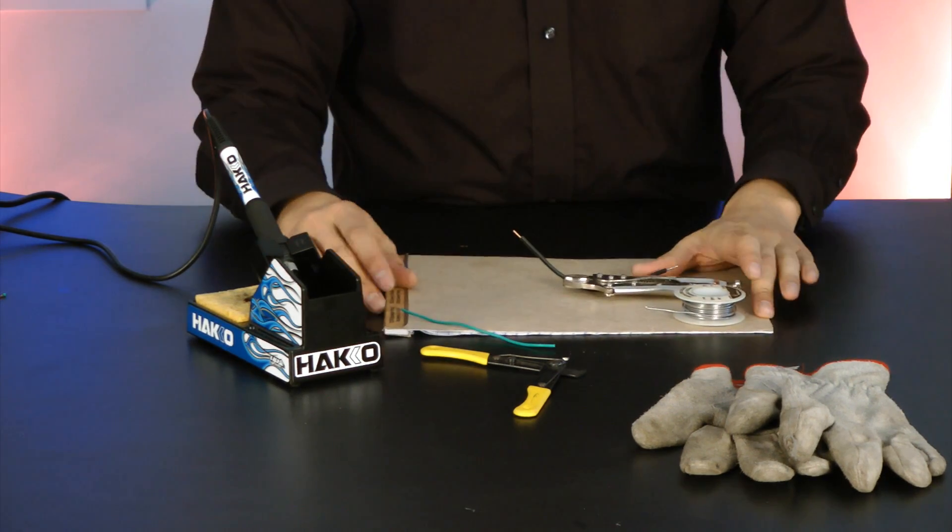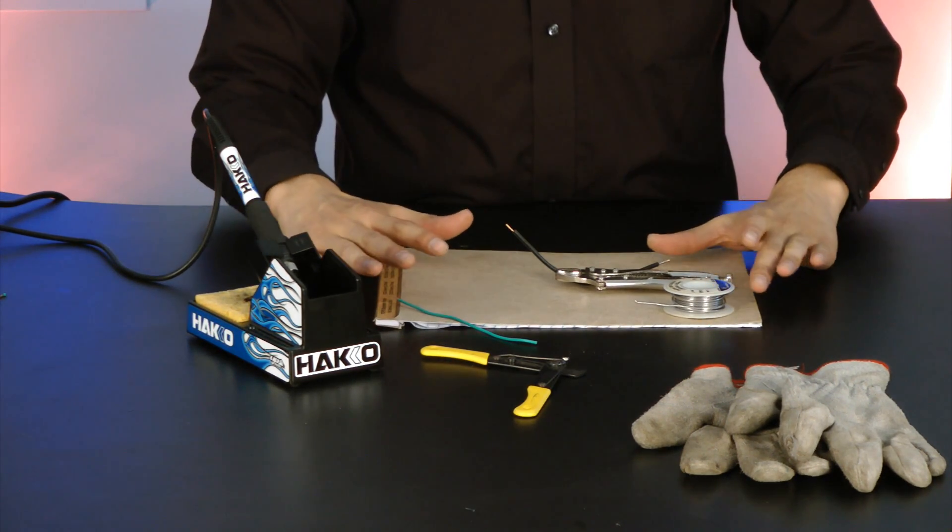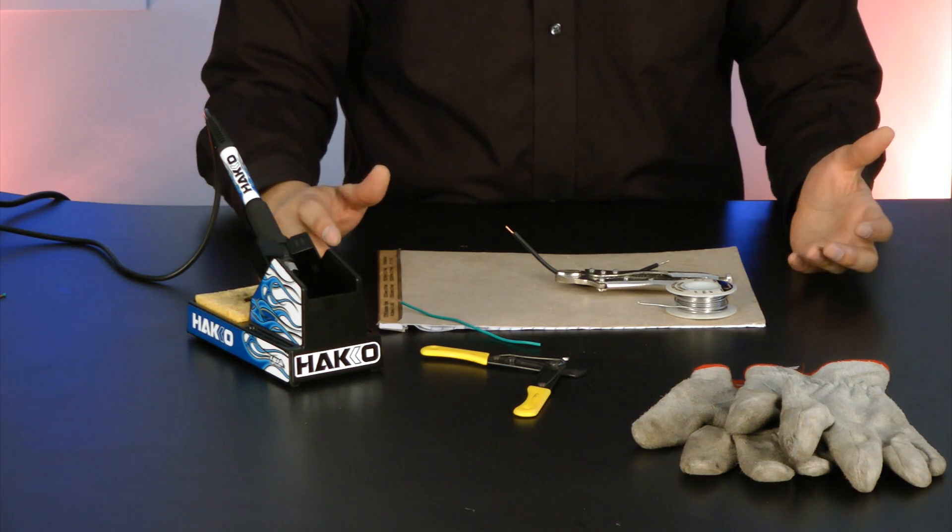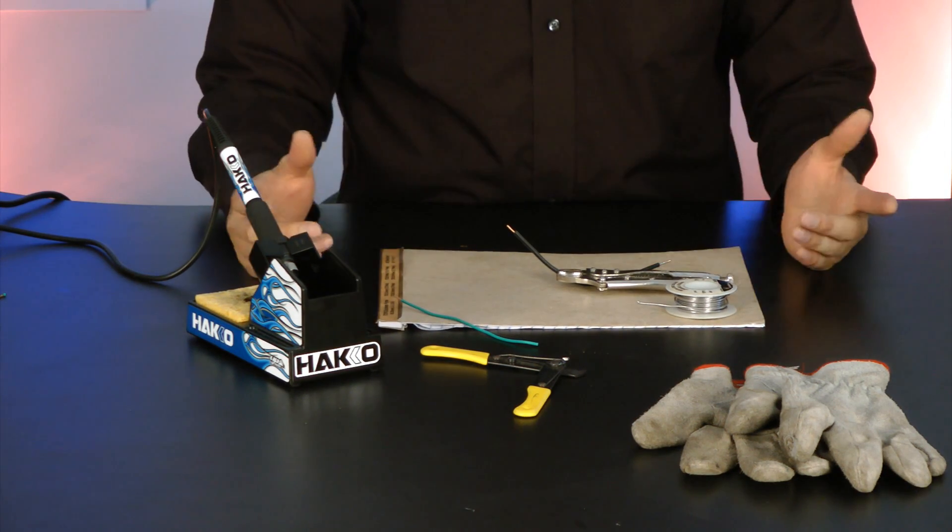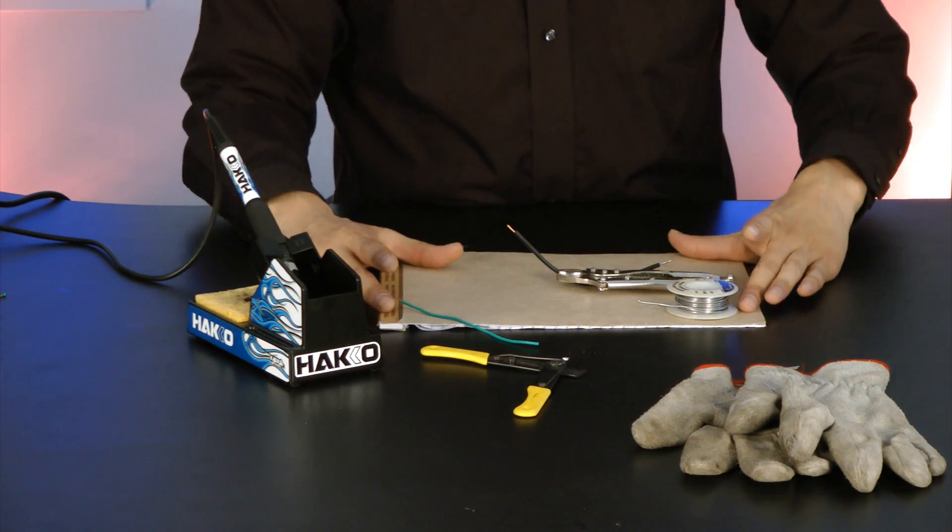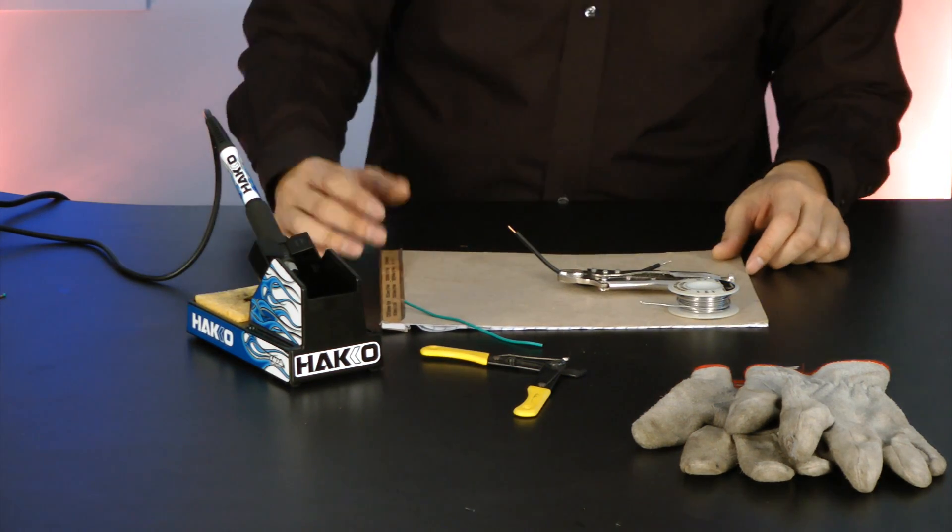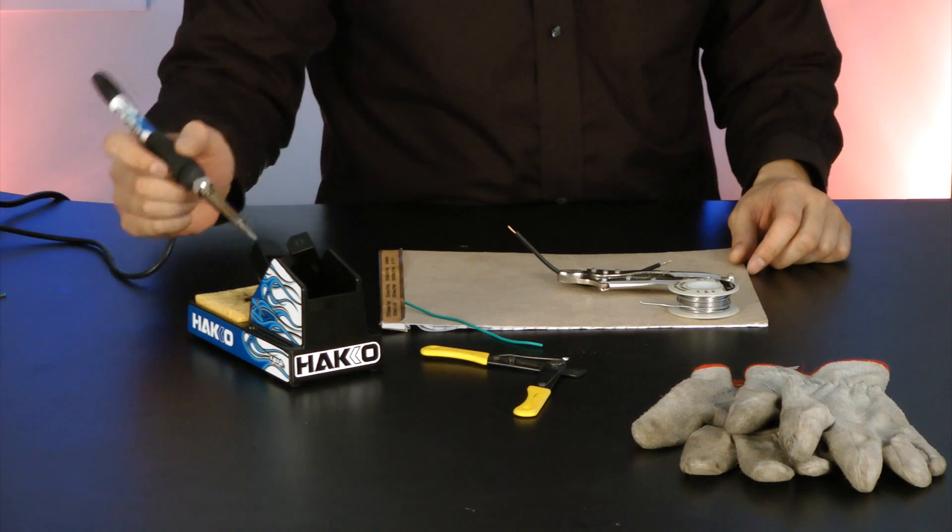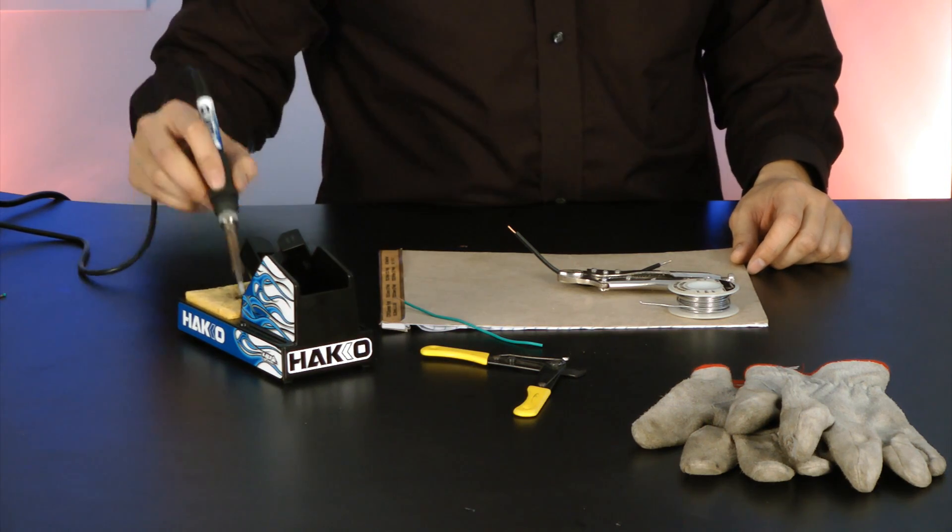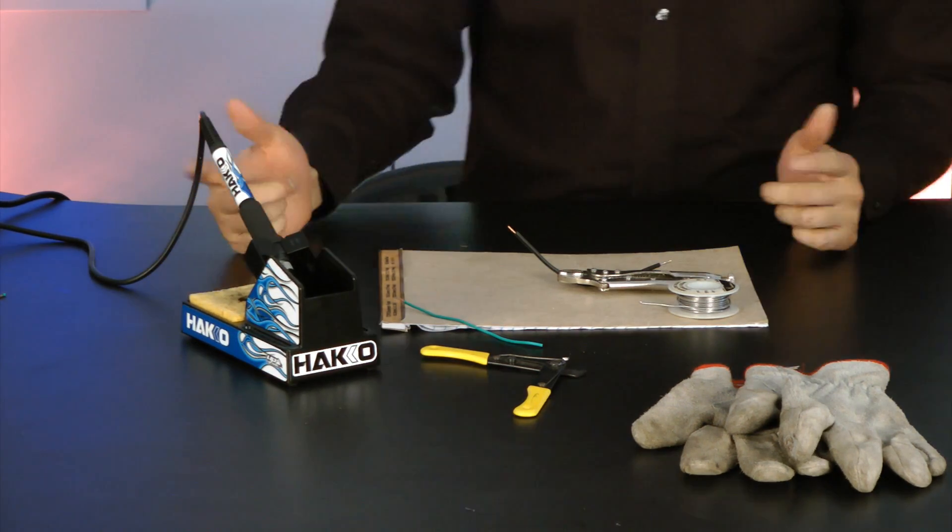And also you notice that I'm soldering on a piece of cardboard here. The purpose of the cardboard is just to protect the tabletop surface here from any molten solder that may splash onto it. Alright, let's get started.